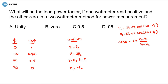What will be the load power factor if one wattmeter reads positive in the two-wattmeter method for power measurement? The answer is cos 60°, which is 0.5. That is the load power factor. The first trick is complete.